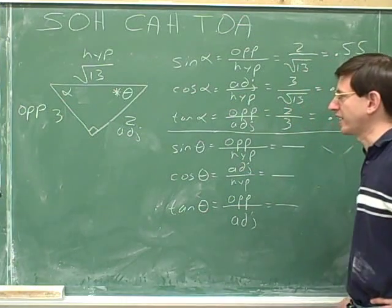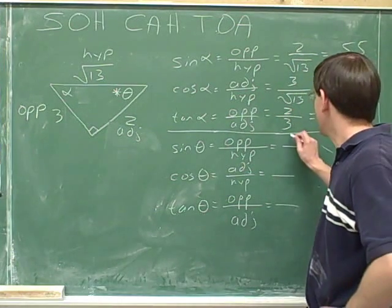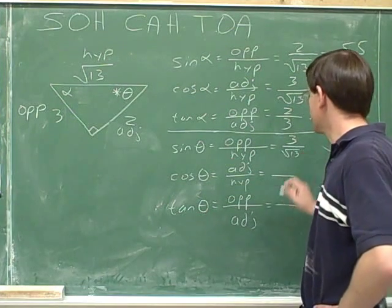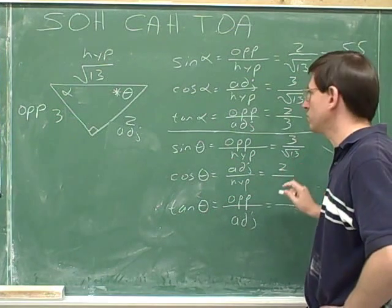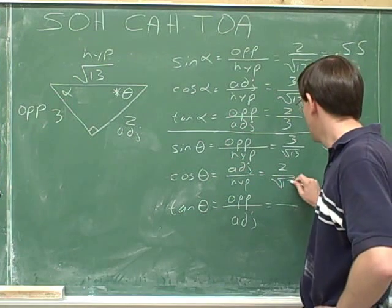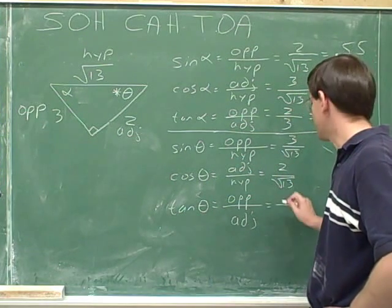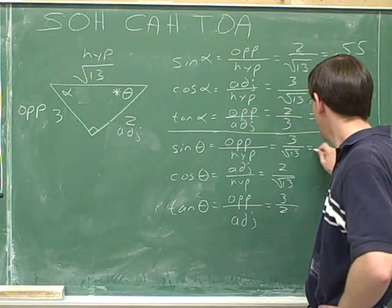And now it's a simple matter of plugging in. The opposite side is 3, and the hypotenuse is root 13. The adjacent side is 2, and the hypotenuse is root 13. And the opposite side is 3, and the adjacent side is 2.